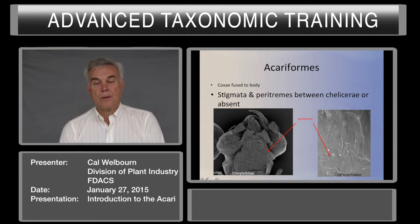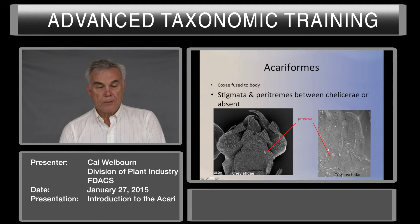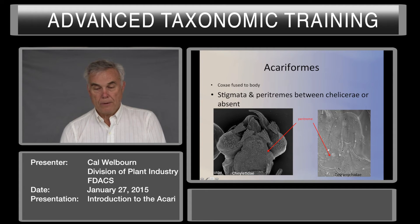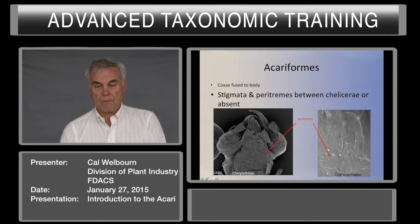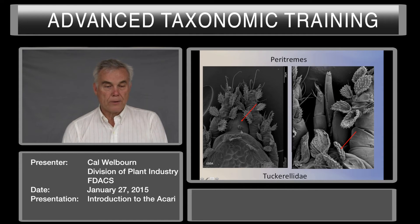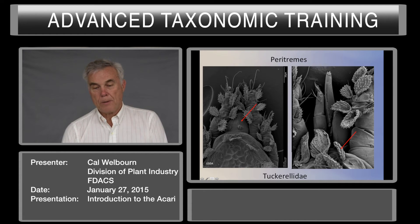Stigmata and paratremes — they're usually between the chelicerae, on the chelicerae, or absent. In this chelicerate, you can see part of the paratremes here. In the spider mite, you can see the paratremes coming out and hooking around. Here is another paratreme — the stigmata is actually down inside here. This is the stylophore of the tetranychid mite. Here is the tyderid: paratremes in the immature, and the emergent paratremes in an adult.